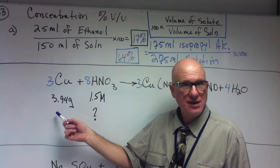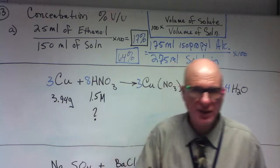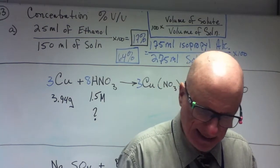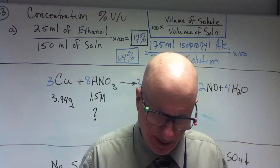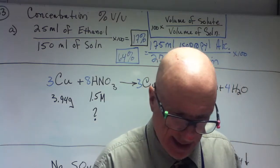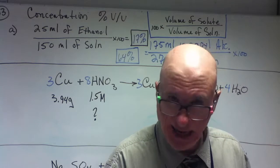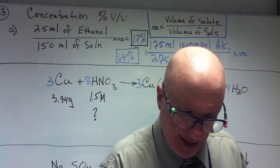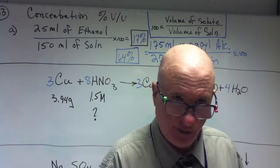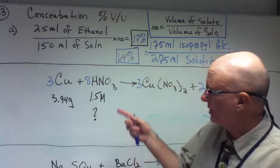Let me read the problem as it is worded in the book. It says, how many milliliters of 1.5 molar nitric acid contains enough nitric acid to dissolve an old copper penny with a mass of 3.94 grams, and this is the equation that they give.